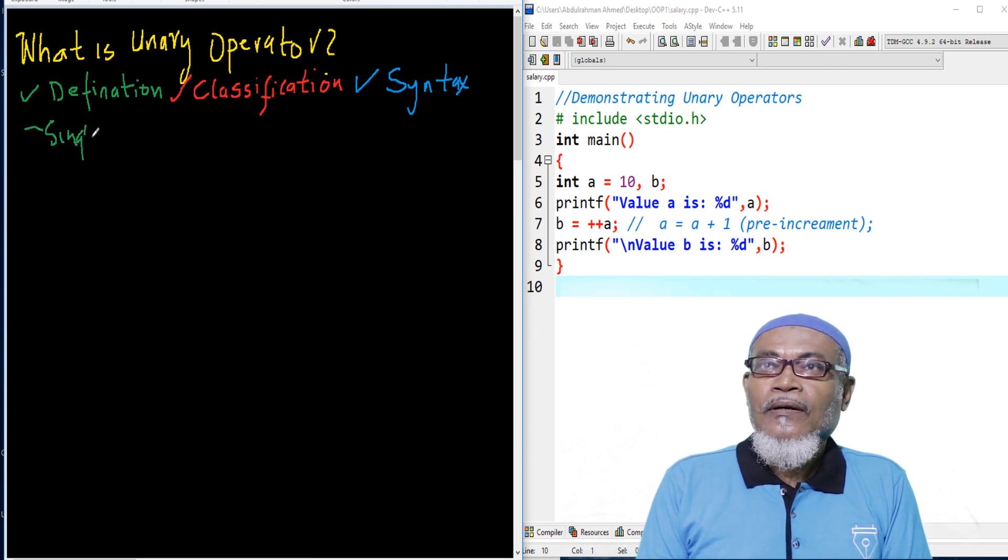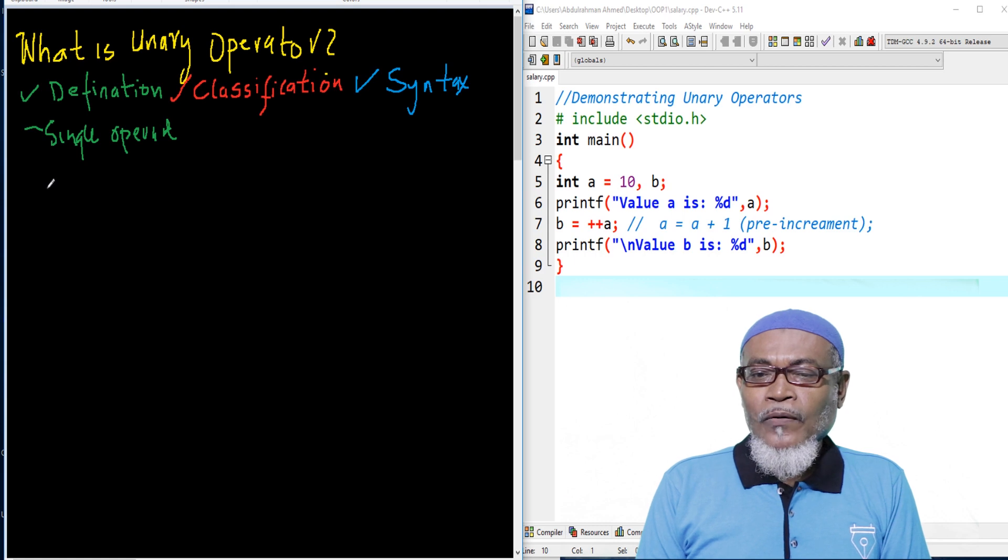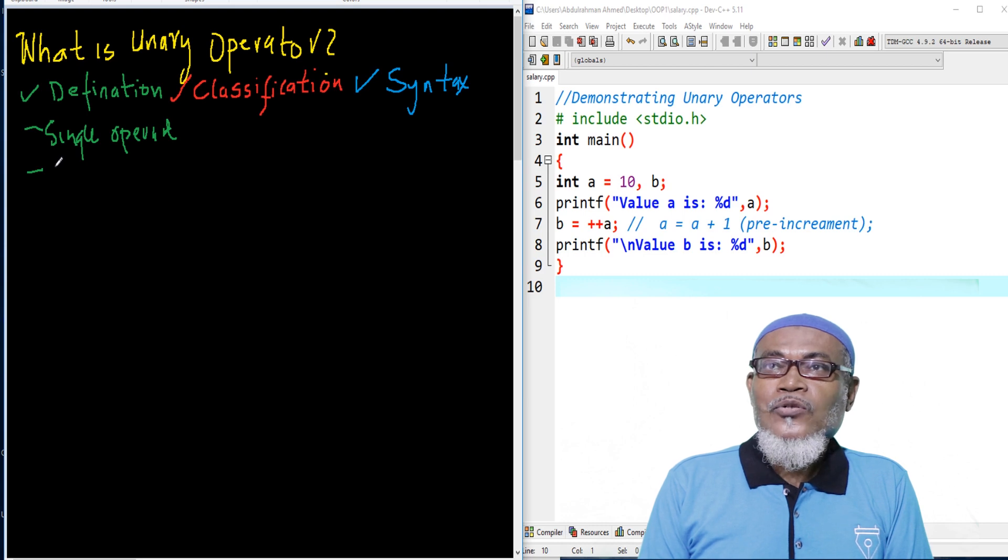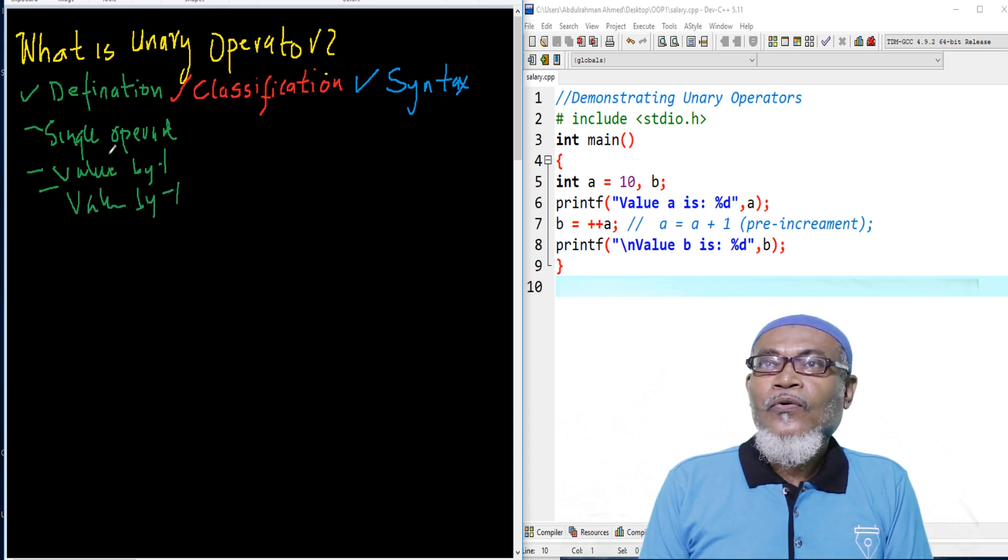And also, it has two characteristics. It either increases the value by one, so it increases the value by one, or alternatively it decreases the value by one also. So, this is what you call a unary operator.